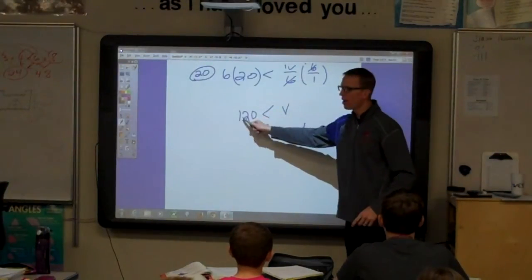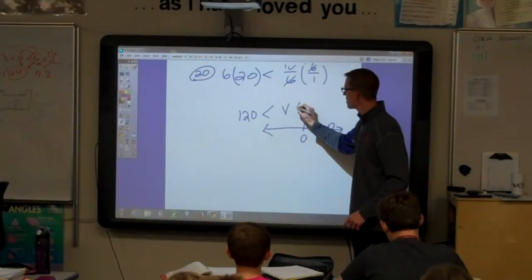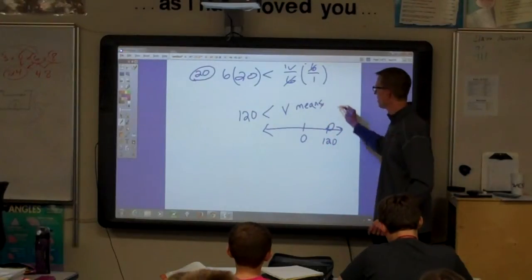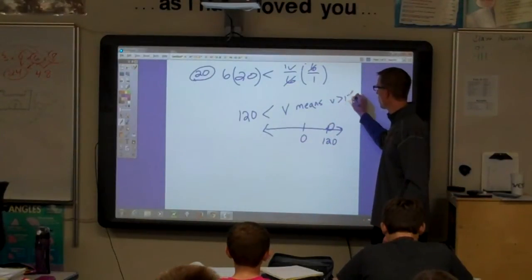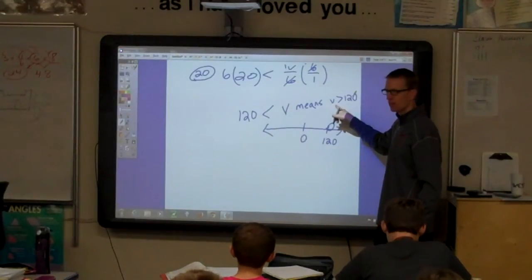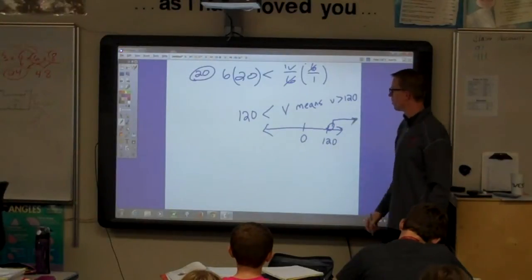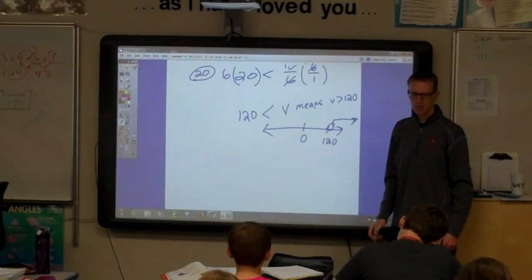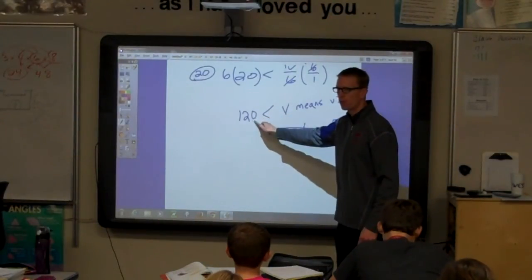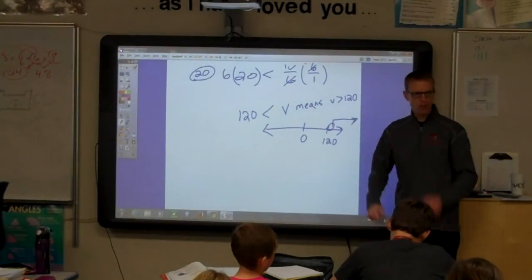This one is written as 120 is less than B. Which means that B is greater than 120. We want to graph what B is. So B is greater than 120. Make sure you're careful with those where the number is written first. Make sure that you turn that around so you know what that means.